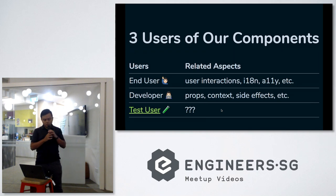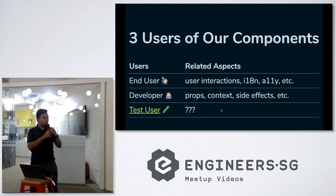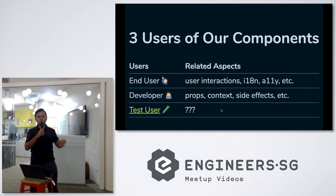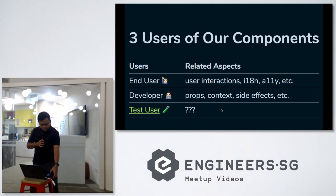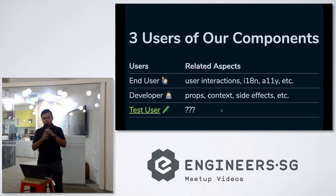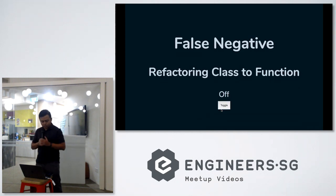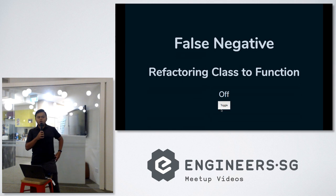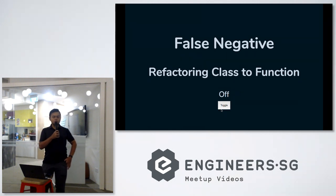There's a concept that's at least new for me — when we are developing our components, there are three types of users. First is the end user, the one that is using our components. Second is the developer, the one rendering our components in their app. And third is the test user, which I'm going to explain.